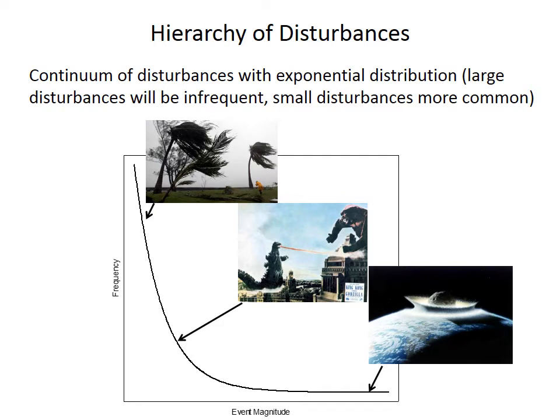Small disturbances might involve things like sea level change over tens of thousands or hundreds of thousands of years. Very small disturbances, like a giant hurricane that might occur every decade or so in the tropics, are going to be minor enough that they perhaps don't even affect any species.